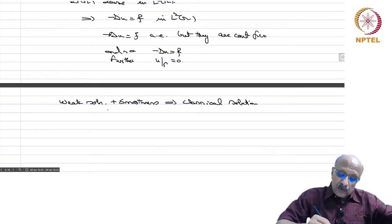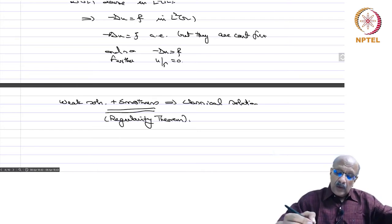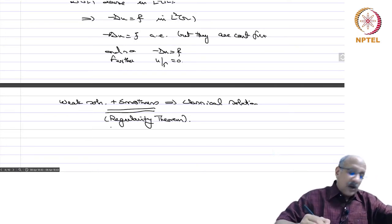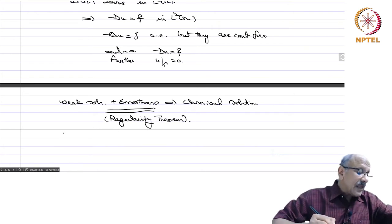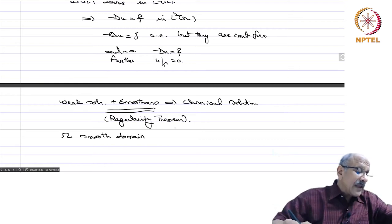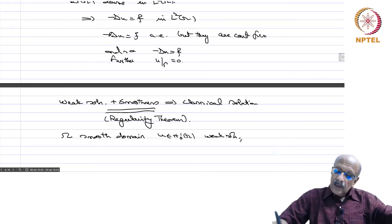The question is when do you have this smoothness? This is guaranteed by what is called a regularity theorem, which we have to prove each time. For any given problem, you have a weak solution via the weak formulation, and then by some other technique you have to show regularity. For instance, if omega is a smooth domain and u is a weak solution in H^1_0(omega) with f in L^2(omega), this will imply u belongs to H^2(omega) ∩ H^1_0(omega).